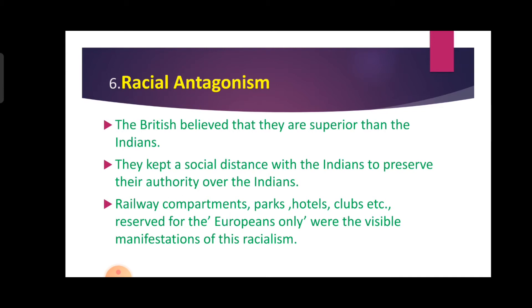The sixth result is racial antagonism, meaning racial superiority. The British believed they were superior to the Indians and kept a social distance with them to preserve their authority. Railway compartments, parks, hotels, clubs, etc., reserved for Europeans only were the visible manifestation of this racialism.